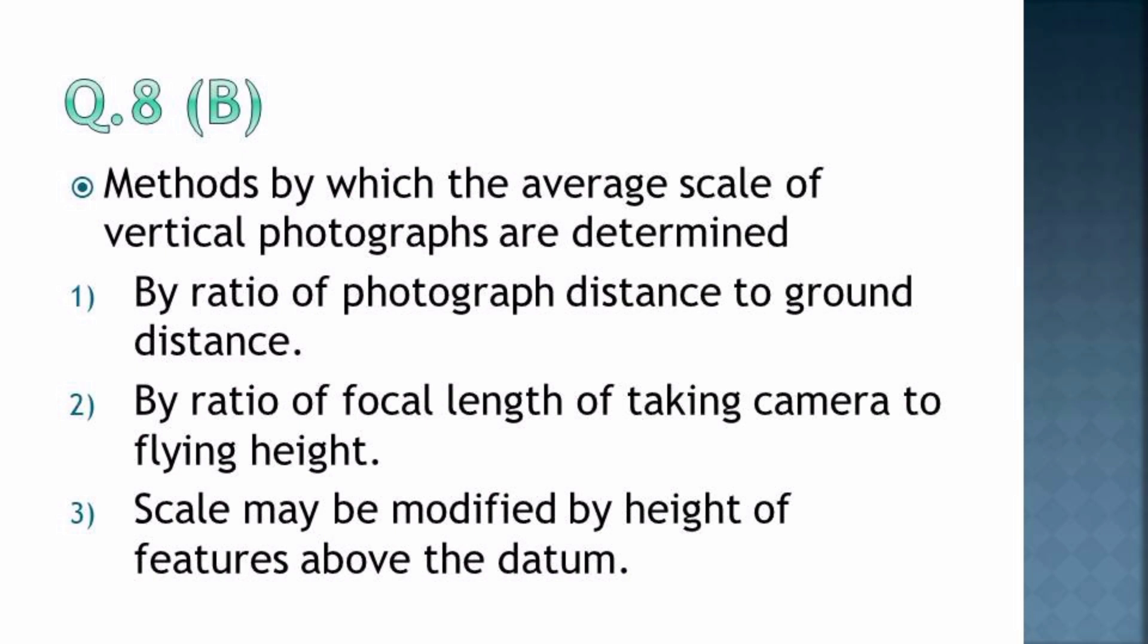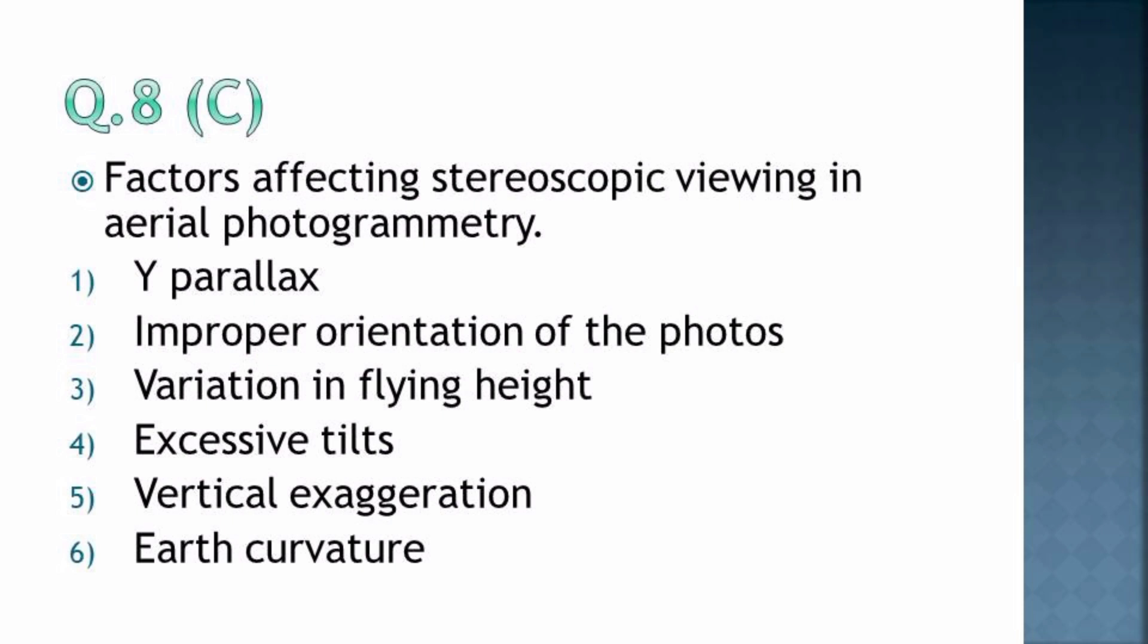Question 8C, factors affecting stereoscopic viewing in aerial photogrammetry: First, the Y parallax, that is an error in the parallax on the Y-axis. Improper orientation of the photos from the flying craft or drone. We can have improper orientation, then we have variation in flying heights. The height keeps on varying due to environmental conditions like wind and terrain.